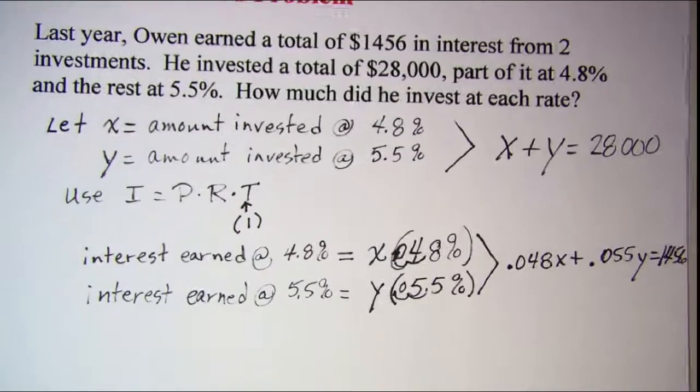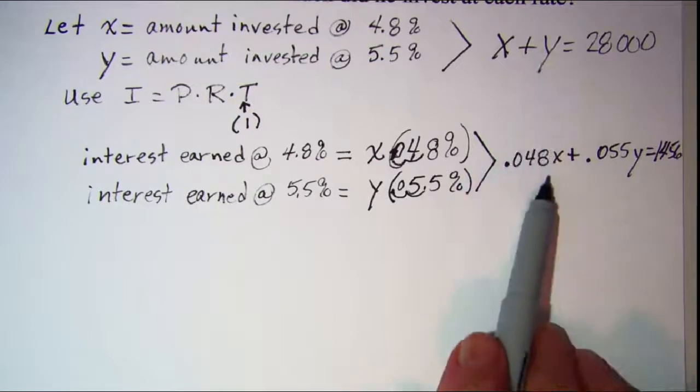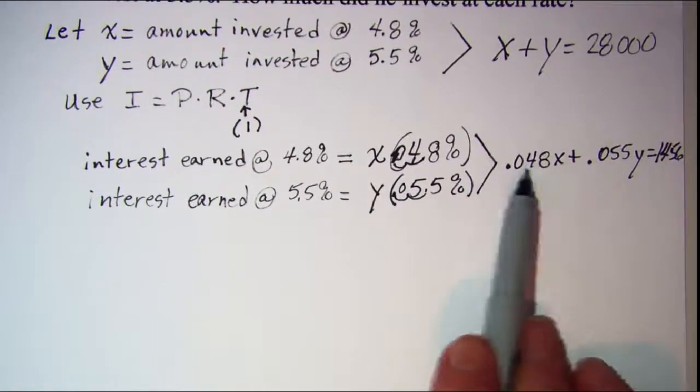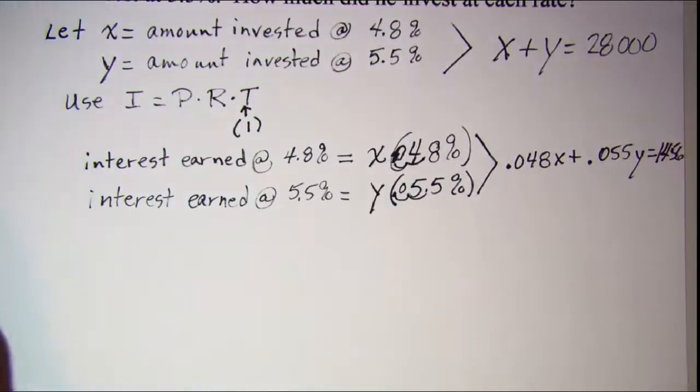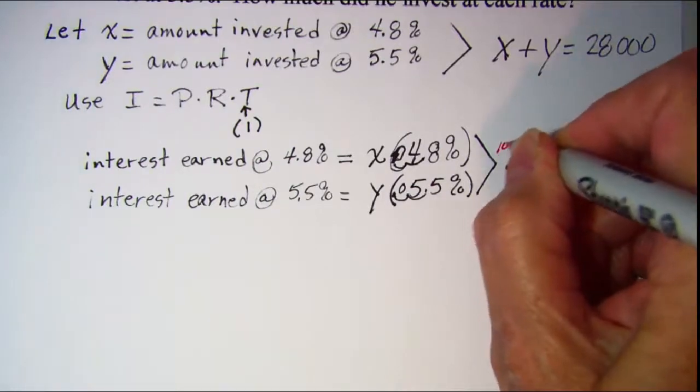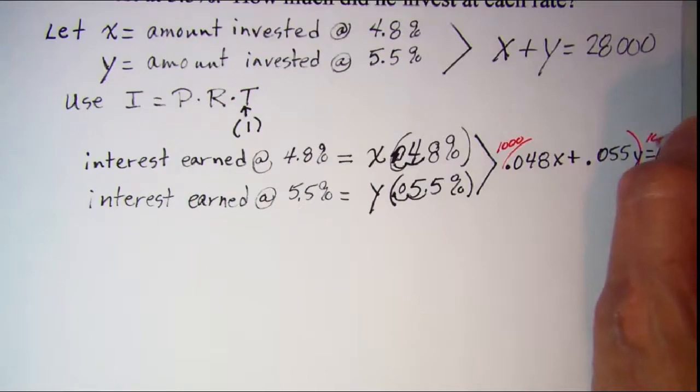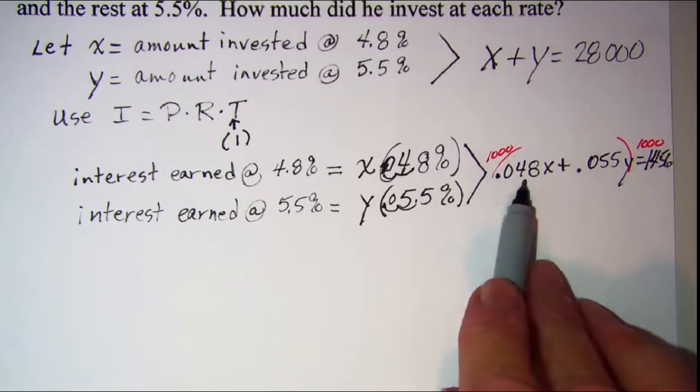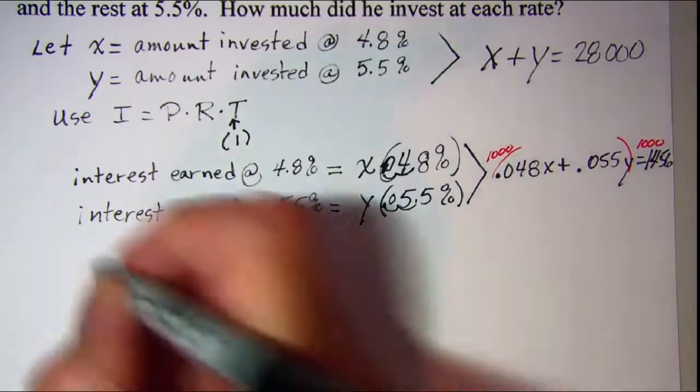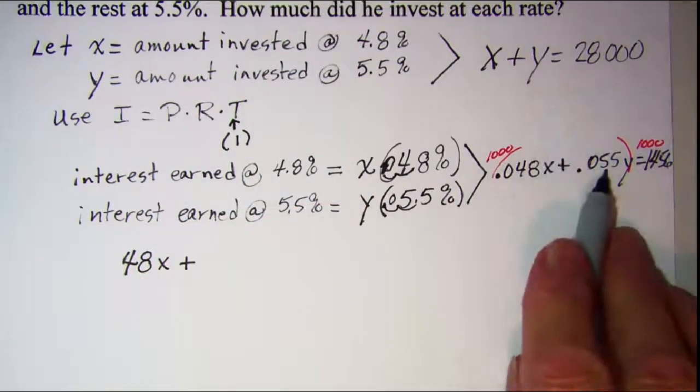Let me copy these two. These are my two equations that I'm going to use. Let me take this one first and I'm going to multiply every term by a thousand. So that this equation then when I multiply this first term by a thousand, I have 48x plus 55y equals $1,456,000.